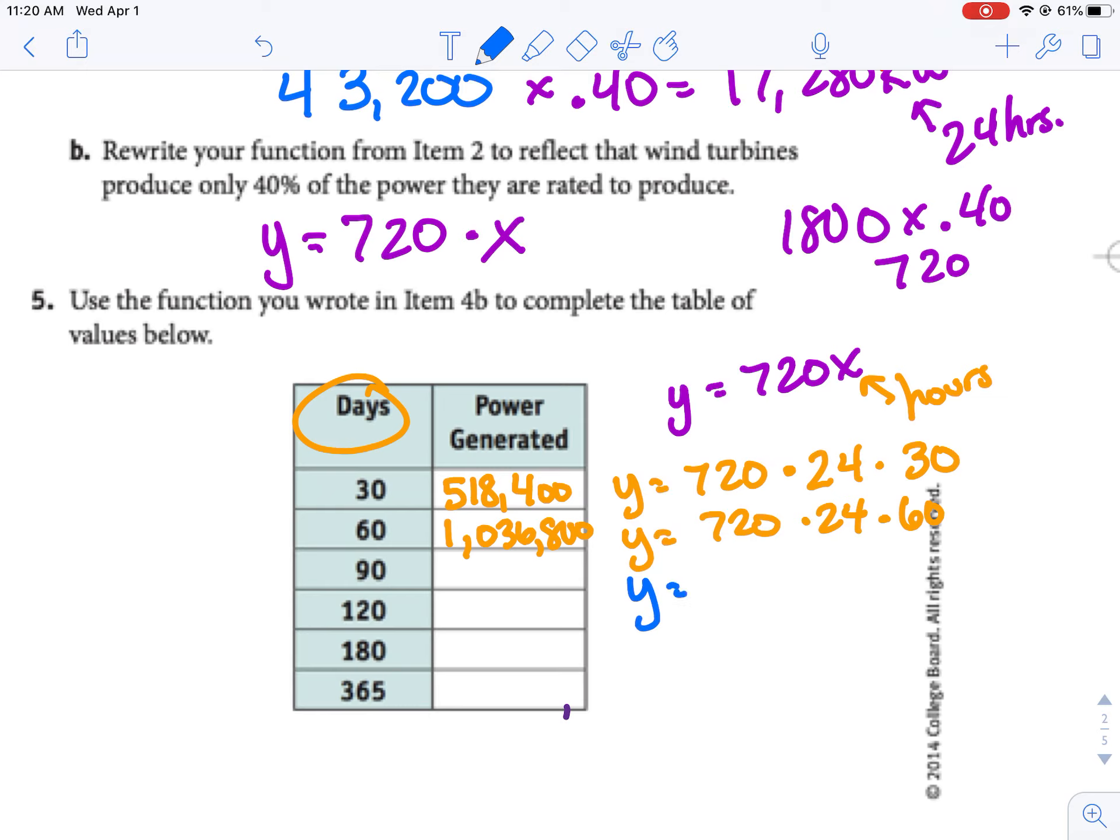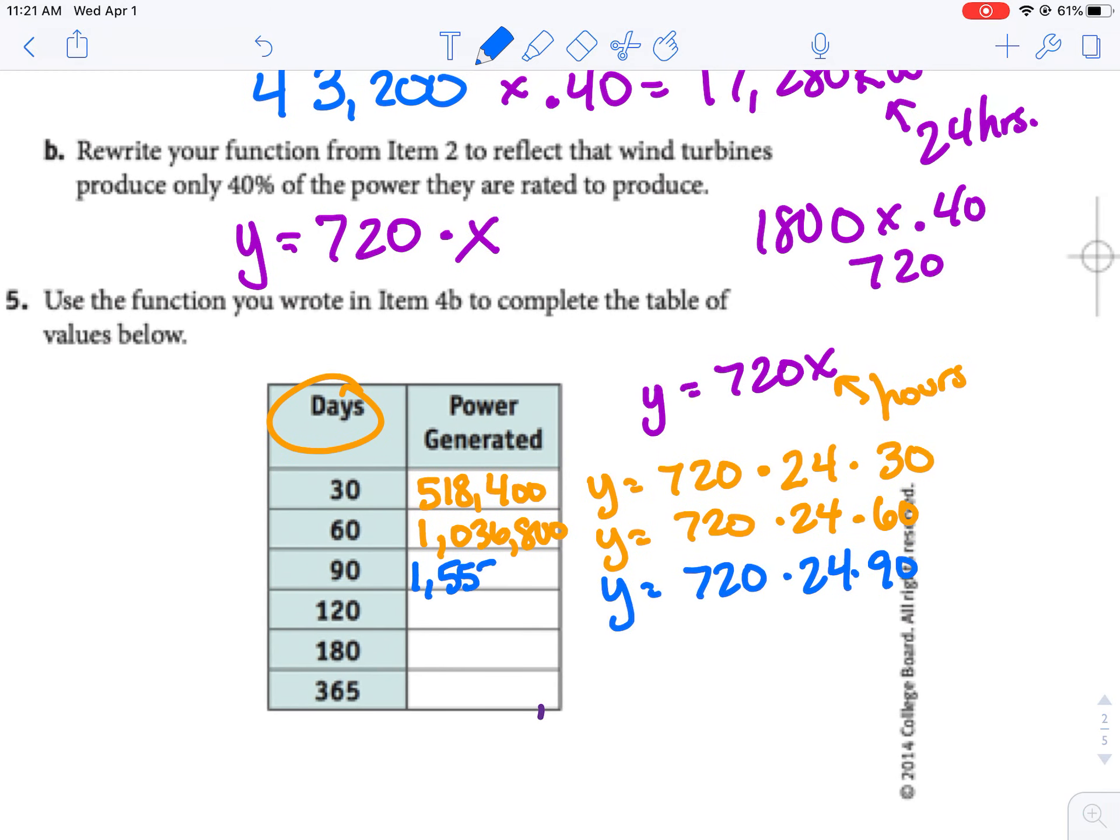So 90 days, we're going to take 720 times 24 times 90, and that gives us 1,555,200. If we keep going, but instead of 90, multiply by 120, we get 2,073,600. If we multiply by 180 instead of 120, we get 3,110,400. And then the last one, 365 days or a year, you get 6,307,200. So those numbers get pretty big pretty fast. We had to multiply by that 24 because each of those is hours, and there's 24 hours in each.